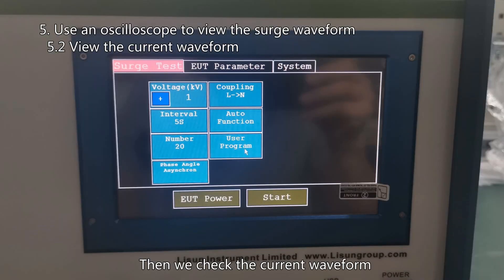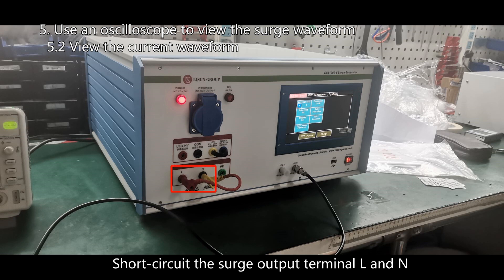Then we check the current waveform. The setting of surge generator is the same as when viewing the voltage waveform. Short circuit the surge output terminal L and N.